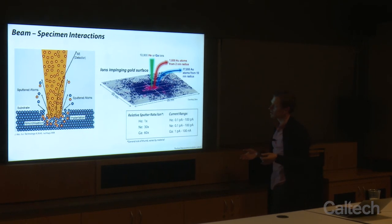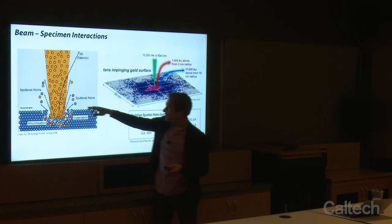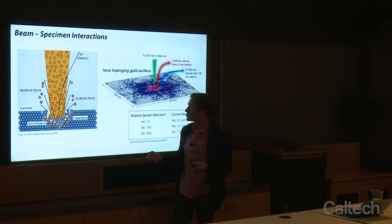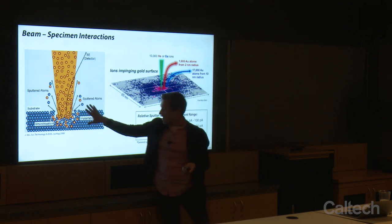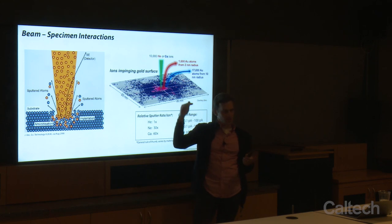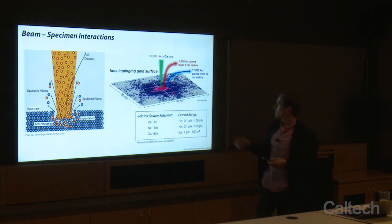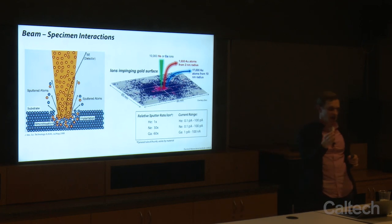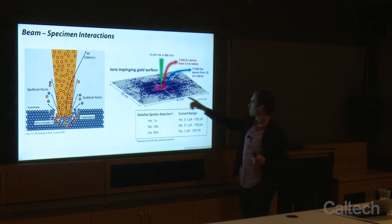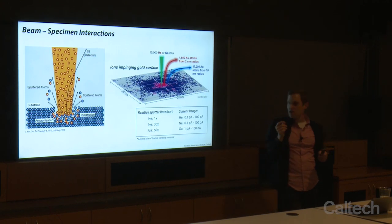Any time we interact a focused ion beam with a sample, we have a number of events: we knock out secondary electrons used to form an image; we sputter away atoms for milling; and ions implant at some depth proportional to their energy, causing amorphization in the damage zone. Looking at the different sputter radii — a gallium FIB might be formed down to 5-7 nanometers, but the sputter radius is much larger, on the order of 10 nanometer radius. Whereas with the helium beam, our probe size is about half a nanometer and our sputter radius is only on the order of single nanometers, allowing you to cut features that are 4 or 5 nanometers in size.